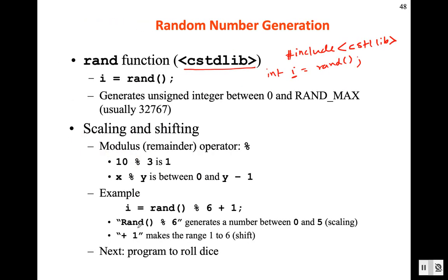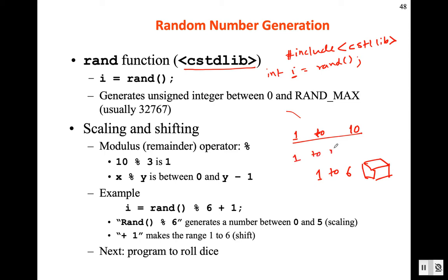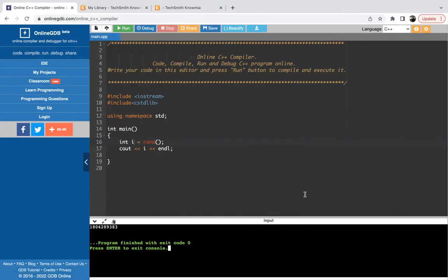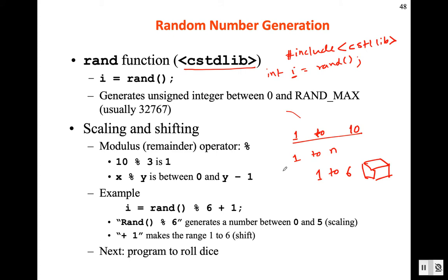What we can do is scale and shift the number. For example, if I want to generate a random number from 1 to 10, or from 1 to 6 like a dice, the raw rand() output is a large number. To keep the number within a range, we can use the modulus operator. Using remainder with a number ensures the result stays within a specific range.